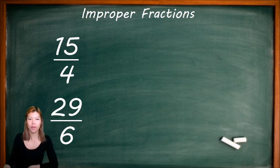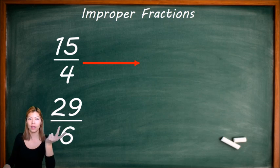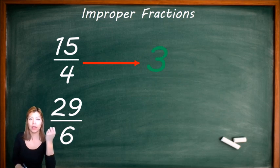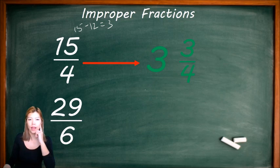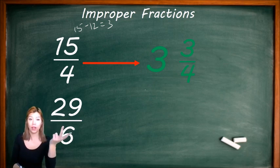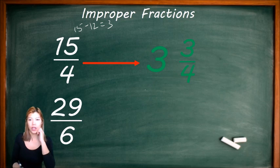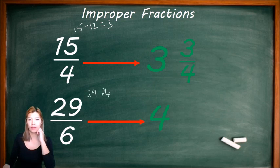Let's try 15 over 4. 15 divided by 4 — how many times does 4 fit into 15? 4, 8, 12 — so it's 3. 3 times 4 is 12, and 15 take away 12 we have 3 left. So the remainder is 3, giving us 3 and 3 over 4. Next, 29 divided by 6 — counting in 6s: 6, 12, 18, 24 — that's 4. 4 times 6 is 24, and 29 take away 24 gives a remainder of 5. So we have 4 and 5 over 6.